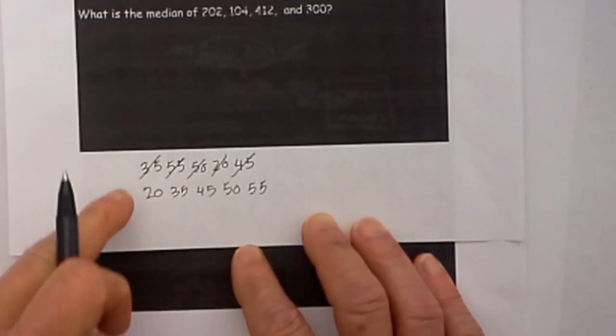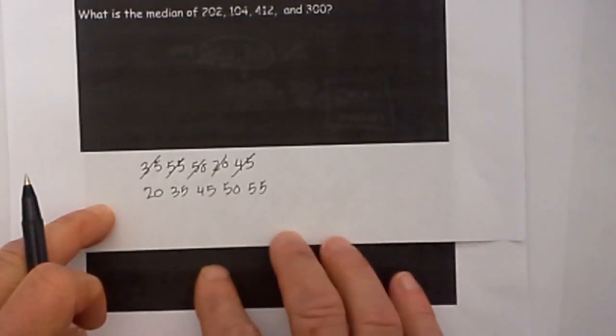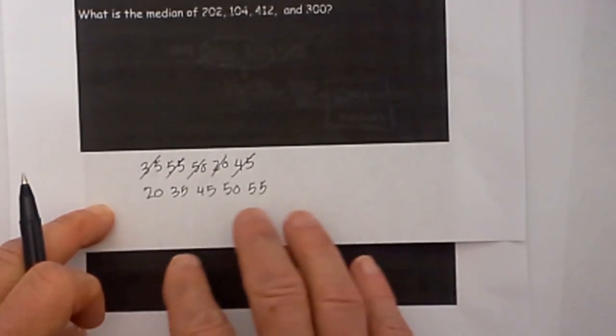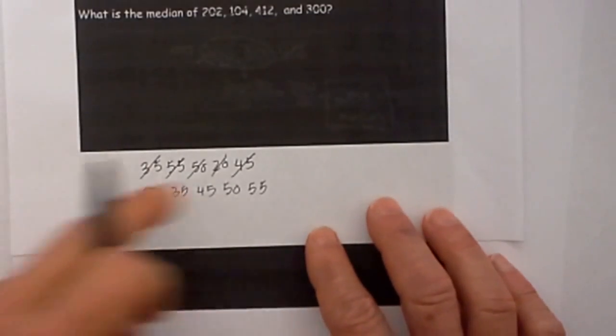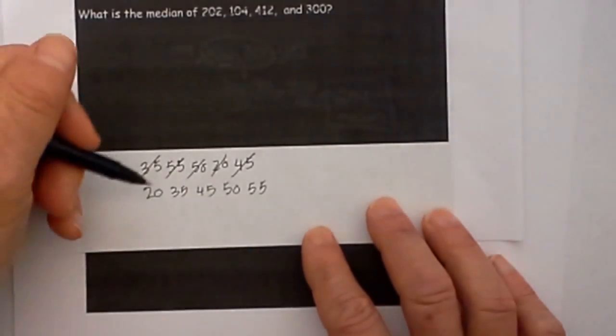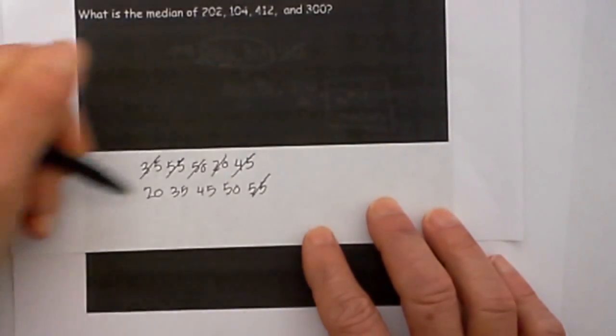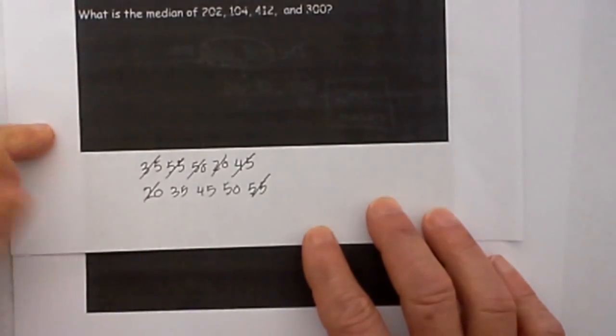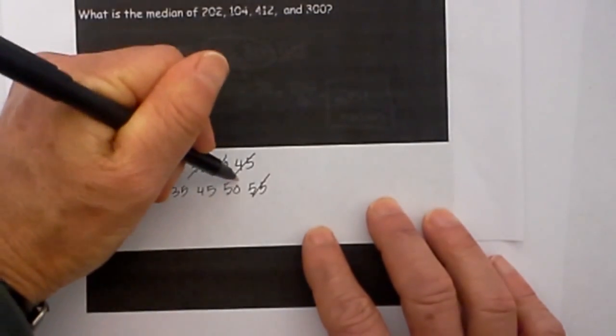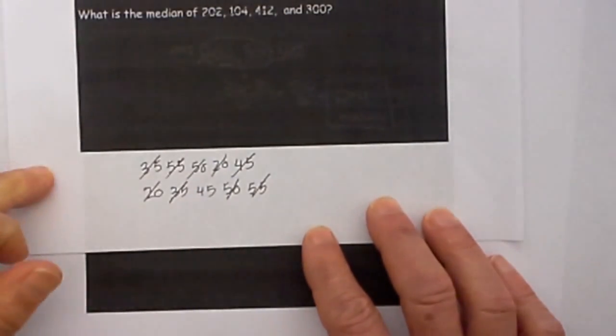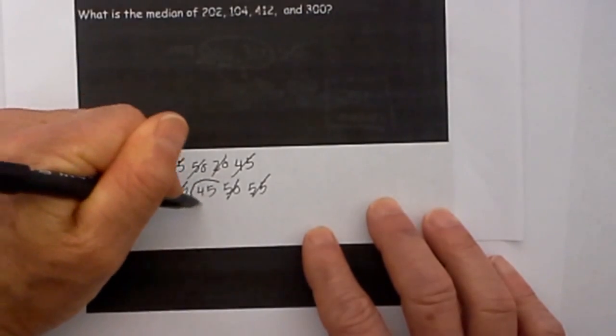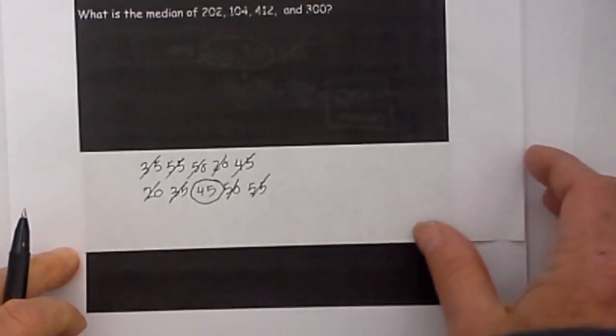Now crossing things off, checking with calculating, especially if you have several numbers with median you need to be careful and not be careless here because you will miss something. So now let's start at the greatest, cross that off and the least, cross that off at the same time. Next we will do it again the greatest and least and that leaves us with 45 and that is the median.